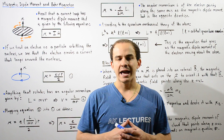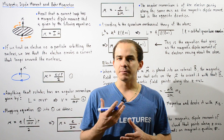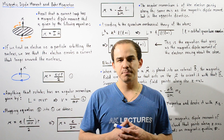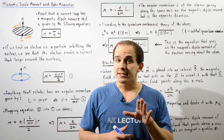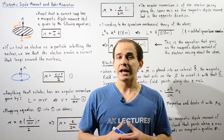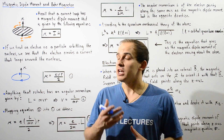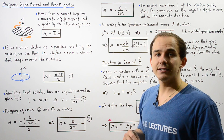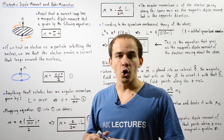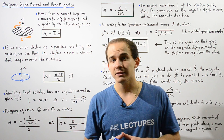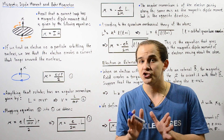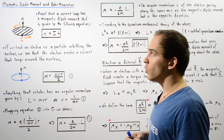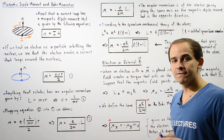Every single electron has an intrinsic property known as the electron spin, and it's the spin of that electron that creates something called the electron's magnetic dipole moment. Before we get into that, let's recall generally speaking how a magnetic dipole moment is formed.